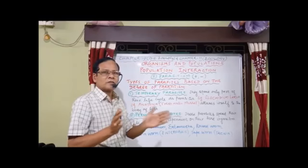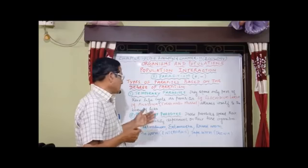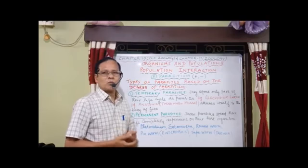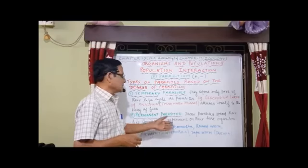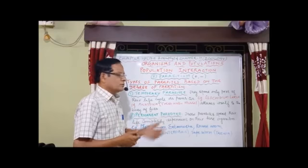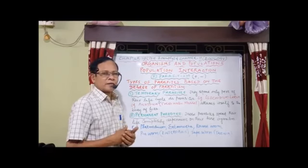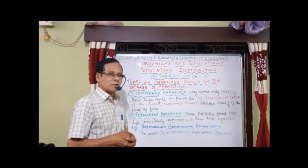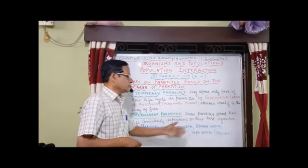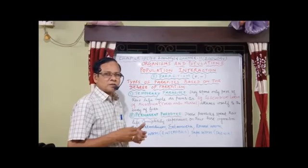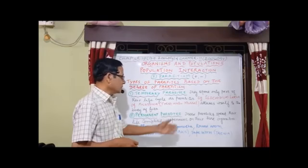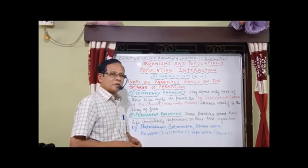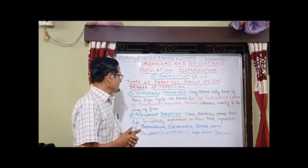The second type is permanent parasites. These parasites spend their entire life cycle completely dependent on the host; without a host they cannot survive. For example, Plasmodium, the malaria parasite, needs two hosts — one is the female Anopheles mosquito and another is the human body. Entamoeba lives in the large intestine. Roundworm Ascaris lives in the intestine of man. Pinworm, binomial name Enterobius vermicularis, lives in the intestine of man. Tapeworm Taenia solium is an intestinal parasite.